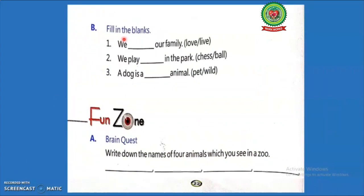Exercise B: Fill in the blanks. First, we dash our family, love or live. Second, we play dash in the park, chess or ball. Third, a dog is a dash animal, pet or wild. Now you will think and take and write the correct answer here on the book.